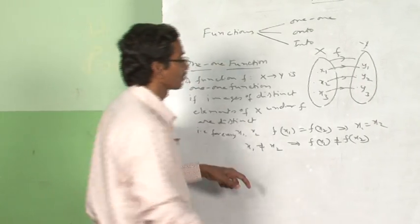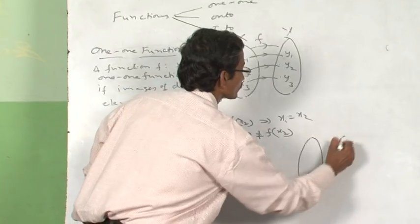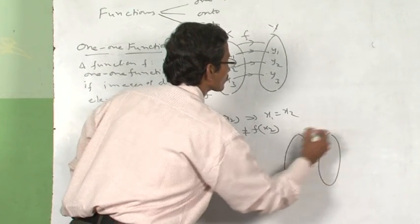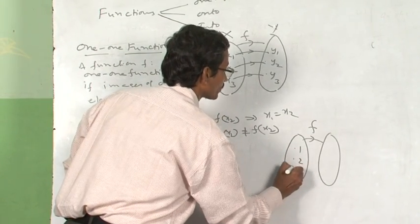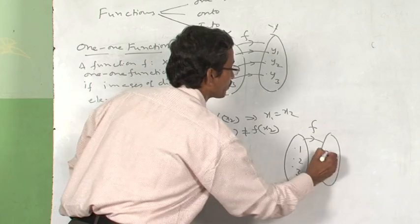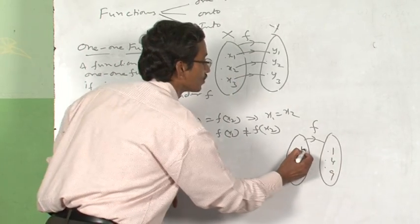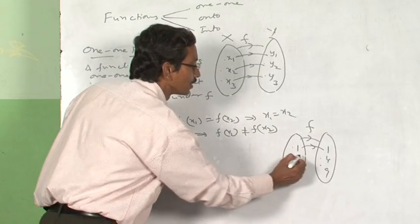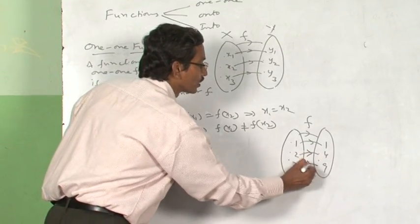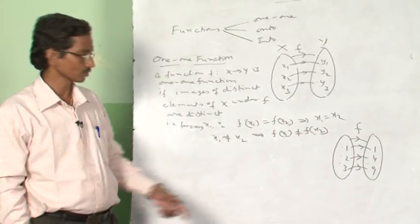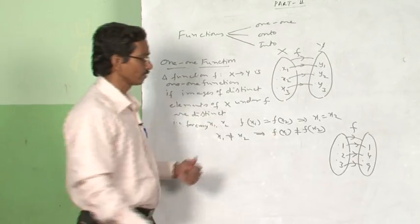I will take one more example. Consider the set {1, 2, 3} mapped to {1, 4, 9}: 1 is connected to 1, 2 is connected to 4, and 3 is connected to 9. So clearly this function is a one-one function.